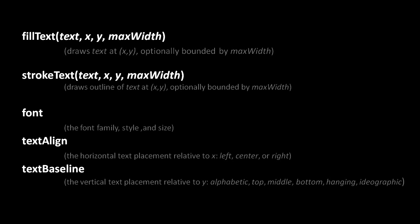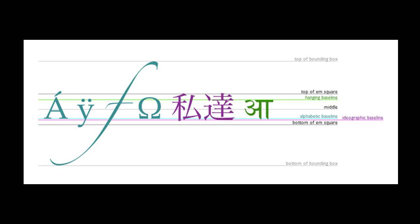For textBaseline we have six possible values: alphabetic, top, middle, bottom, hanging, and ideographic. Alphabetic is the default, and as shown in a diagram, the alphabetic baseline sits pretty much on the bottom of characters. So by default when you draw your text, you're specifying the y coordinate as the line on top of which the text is being drawn. If textBaseline is set to middle, the text would be vertically centered on the y coordinate. If set to top, the letters are written below that line.